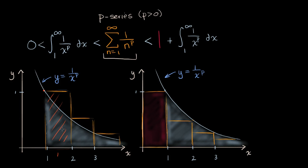The x and y scales are not the same. This rectangle's area would be one over two to the p, and this area is one over three to the p. So the sum of the areas of these rectangles — that is what this p-series is. You can see that each of these rectangles is covering more than the area under the curve, so we know the p-series is going to be greater than this integral — greater than the area under the curve.